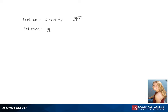To simplify the cube root of 54, we start by breaking down 54 underneath the radical. This gives us the cube root of 2 times 27. Breaking this down further, we get the cube root of 2 times 3 times 9.